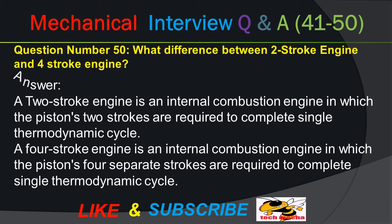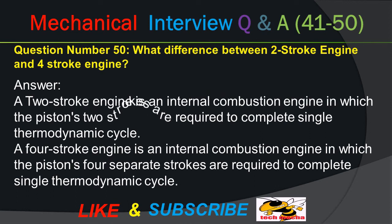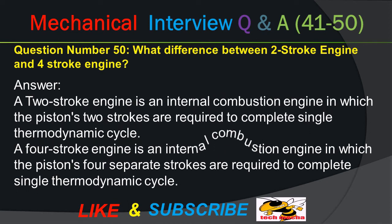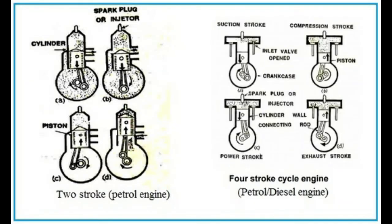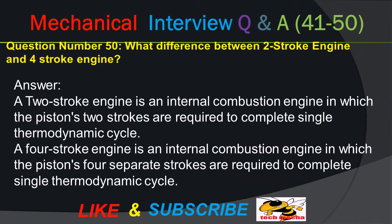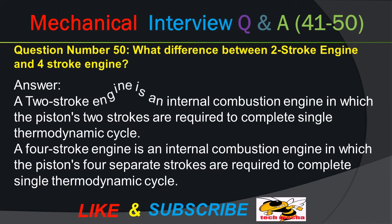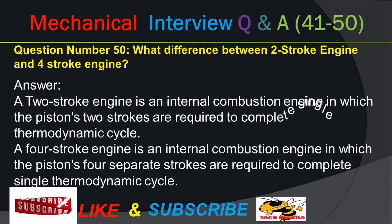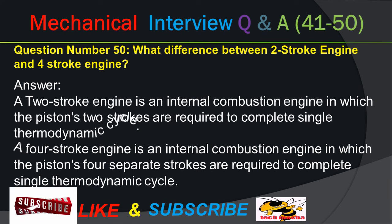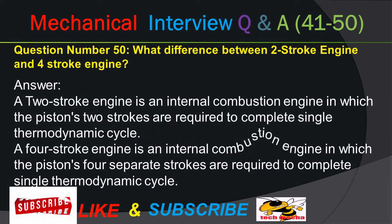Question number 50: What is the difference between a two-stroke engine and a four-stroke engine? Answer: A two-stroke engine is an internal combustion engine in which the piston requires two strokes to complete a single thermodynamic cycle. A four-stroke engine is an internal combustion engine in which the piston requires four separate strokes to complete a single thermodynamic cycle.